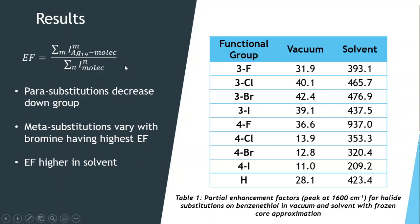When calculating the enhancement factor, this is done by summing the Raman intensities for the metal molecule cluster, and then dividing that by the sum of the Raman intensities for just the molecule, creating a ratio of enhancement.